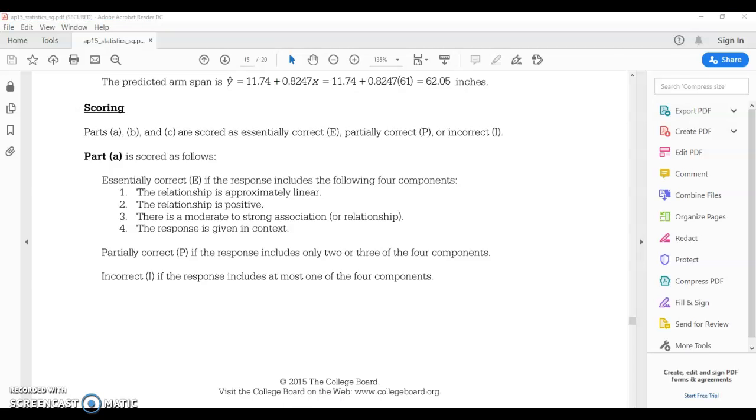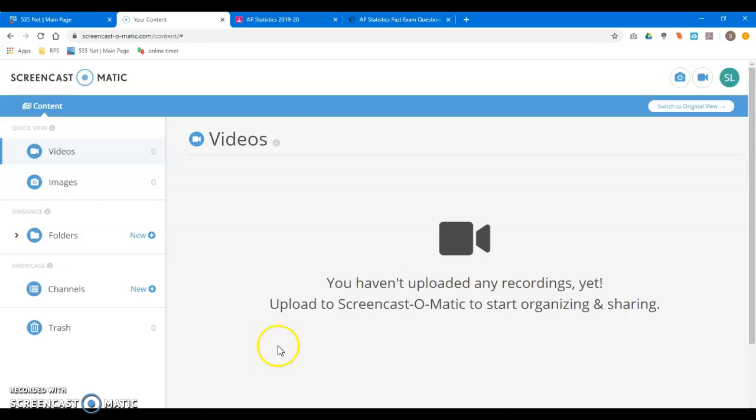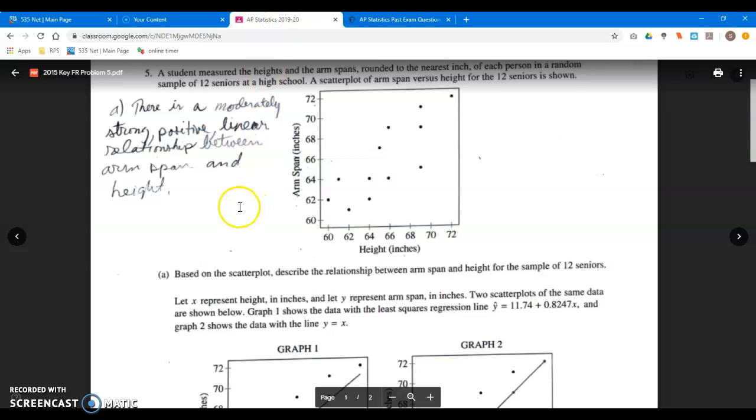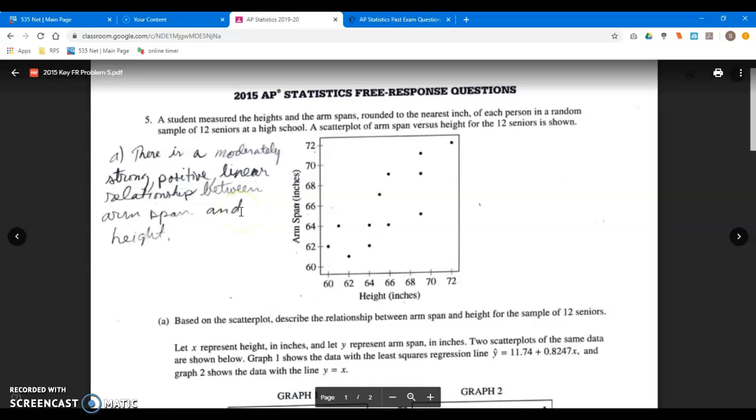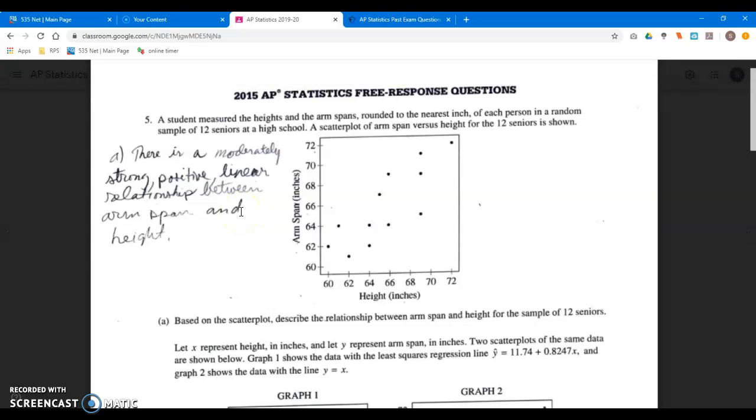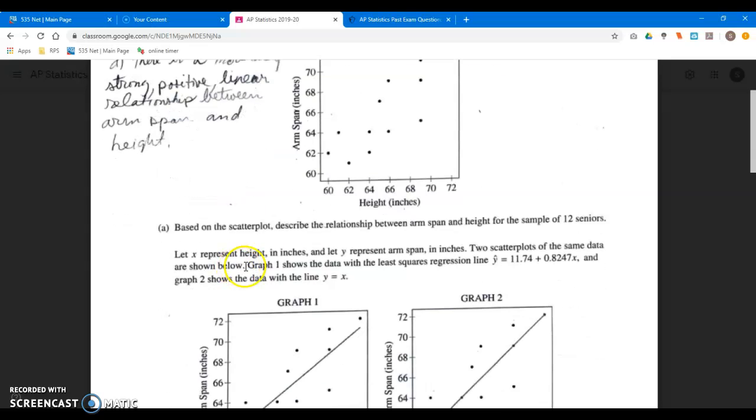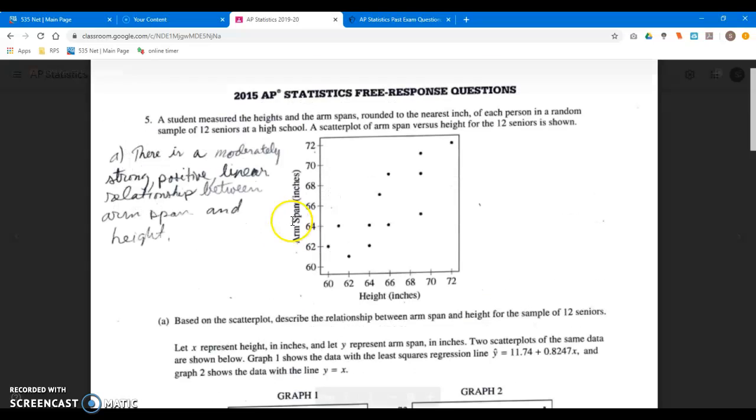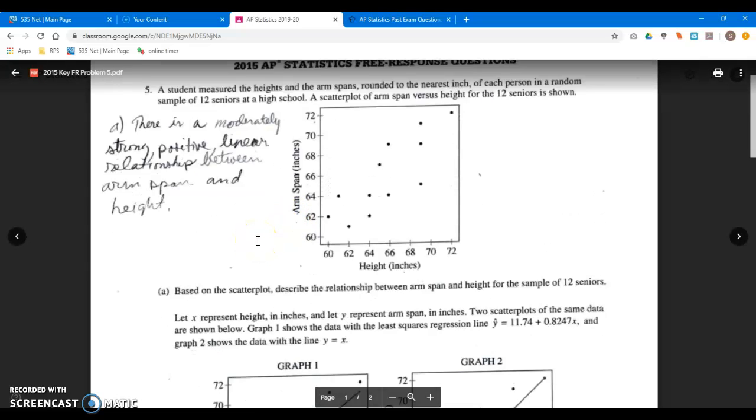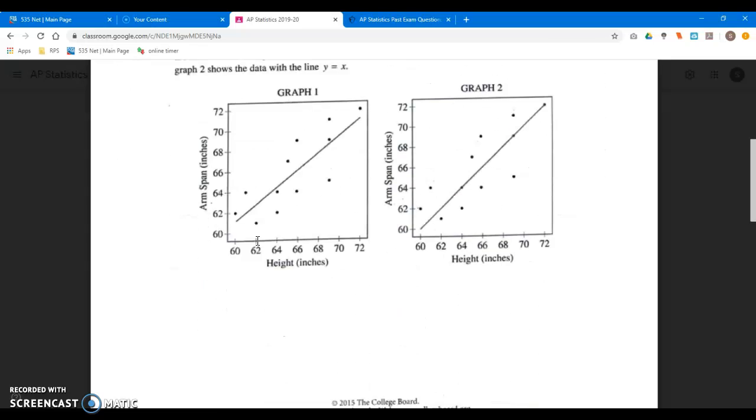Alright, we're now on question number five. This is the linear regression problem - seems like there's always one of those, right? Question number five. I just love this problem. Call me a square if you want to; maybe I'm a statistical nerd.